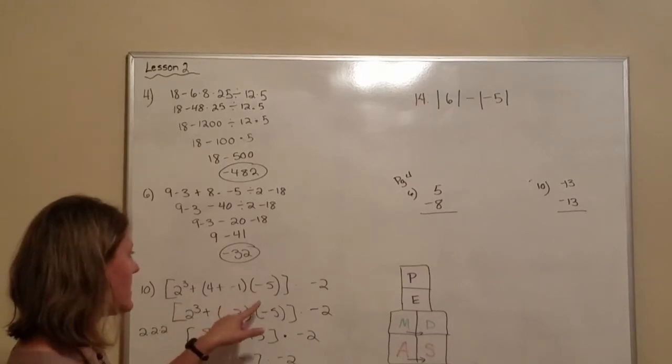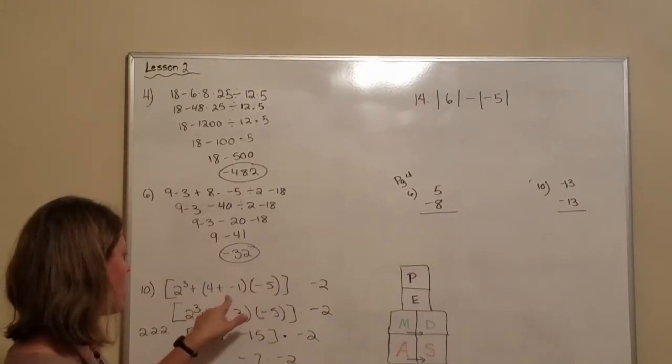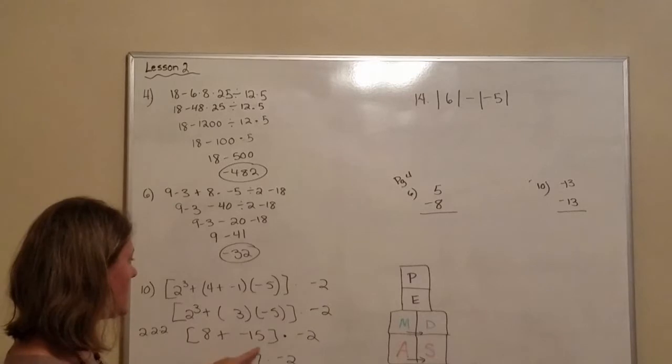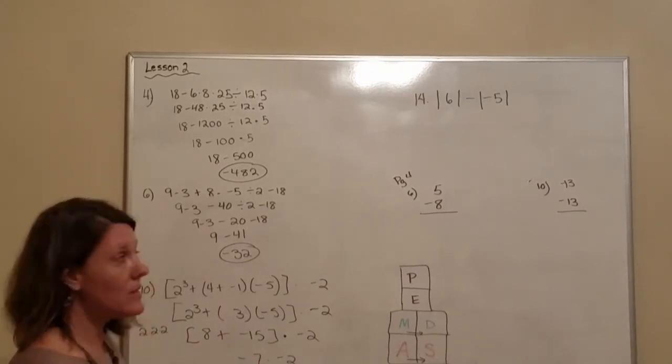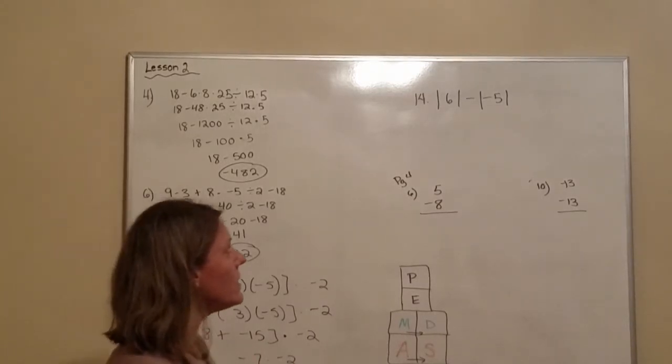Again, we started with parentheses. This was inside. We simplified that. Did our exponents. Put that together. Multiplied negative times a negative. This is a positive.